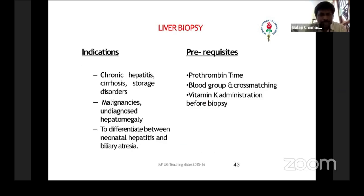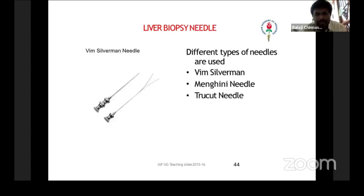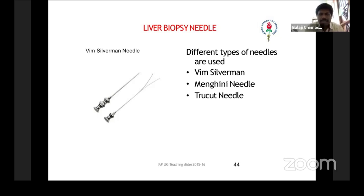Coming to liver biopsy: it is used for cirrhosis, malignancies causing hepatomegaly, and especially in newborns — if the child has neonatal hepatitis to rule out biliary atresia, you go for liver biopsy. The prerequisites are that prothrombin time should be good, with no major bleeding tendencies. Do blood group and cross matching and make sure vitamin K is given. This is the Wilms-Silverman needle used for liver biopsy. There are other needles like the Menghini needle and Tru-cut needle, but remember the Wilms-Silverman needle is almost similar to your bone marrow aspiration needle except that the stilet is bifurcated — that is the important identifying clue.